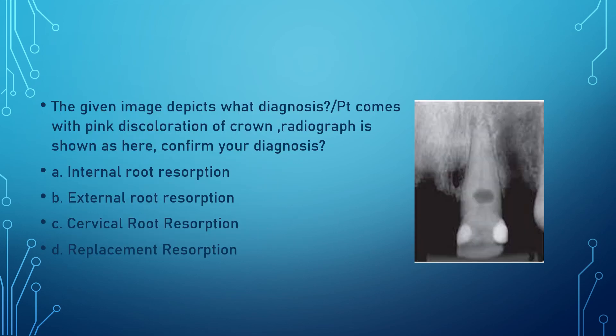Coming to the next question — the image depicts what diagnosis? Another form of the question is: a patient comes with a pink discoloration of the crown and the radiograph is shown. The options were internal root resorption, external root resorption, cervical root resorption, or replacement resorption. The answer here is internal resorption.